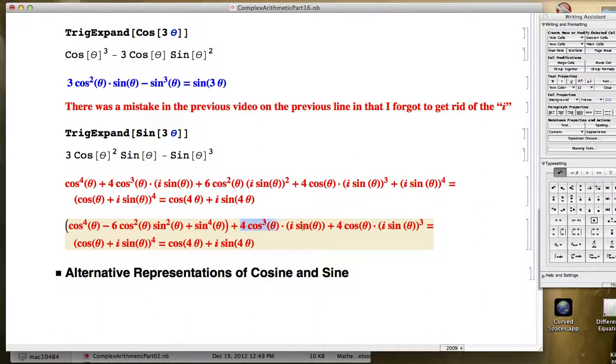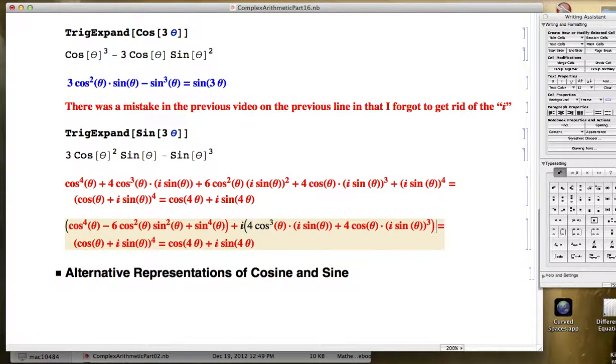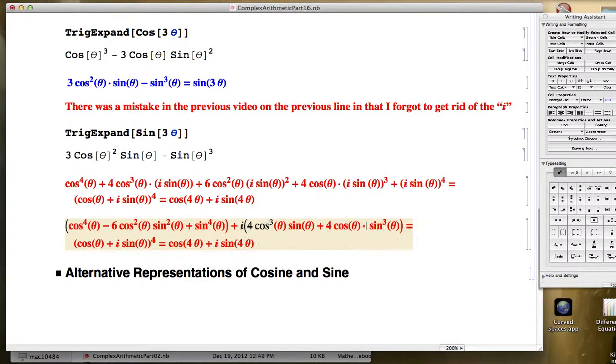These are the two terms that involve an i. This is the imaginary part of the result. This one is just a plain i. This one is an i cubed. If i squared is negative one, then i cubed is going to be negative i. So we're going to get a sine cubed here without an i. And we'll also get a negative sign. It's without an i because I put the i in front. And then don't forget your minus sign here. And so because of this,